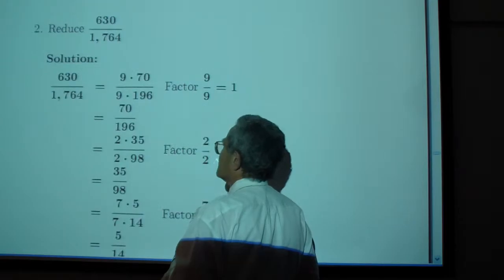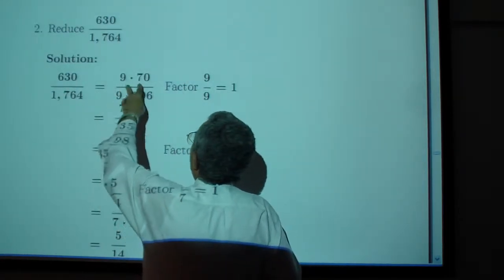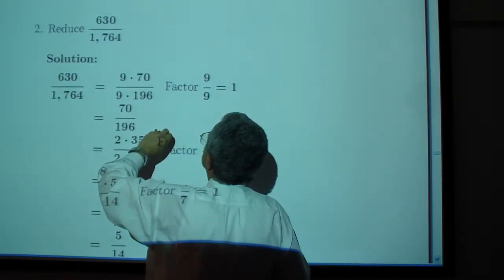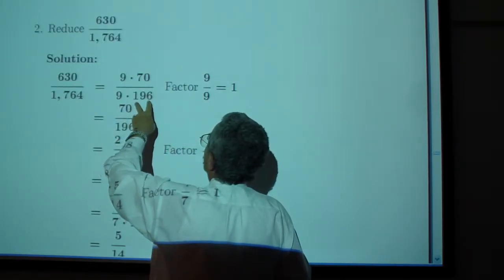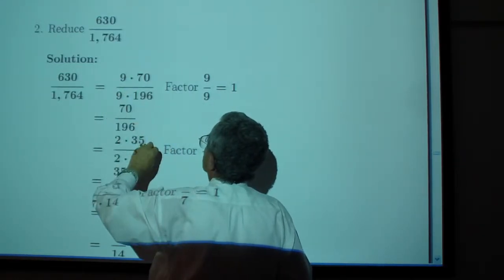Reduce the following. Write 9 times 70 over 9 times 196, factor out 1.